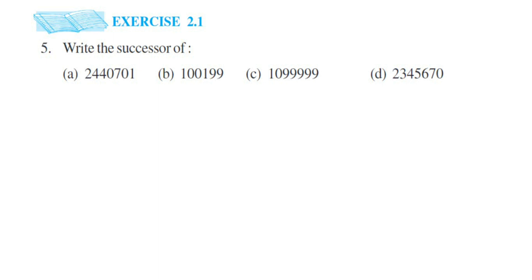Hey everyone, I'm doing exercise 2.15, chapter on whole numbers. The question is to write the successor. The successor means the next number — the immediate next number is called the successor. When finding the successor of a given number, you just add one to it. I'm going to show you by adding one, though it's not necessary — if you know the number you can directly write the answer.